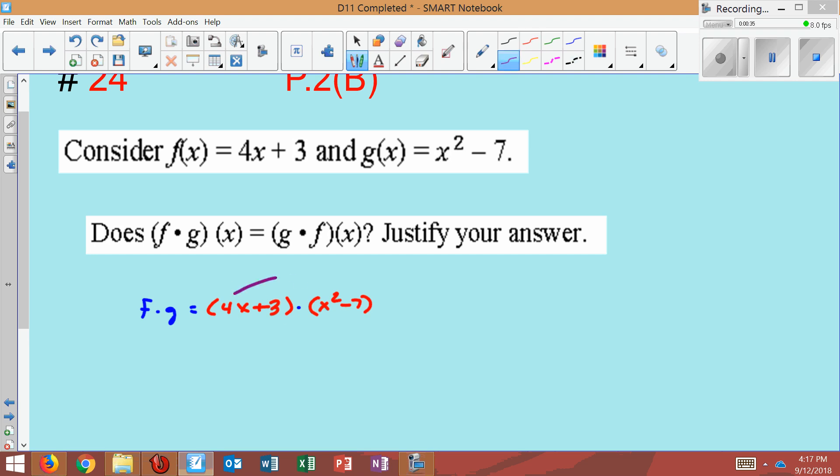So whenever you have two groupings multiplying, you need to FOIL, which means, I'll write out FOIL here. First times first, which is going to be 4x cubed. Outside times outside, which will be negative 28x here, plus 3x squared here, minus 21.